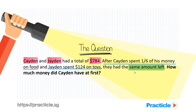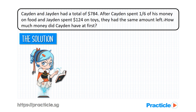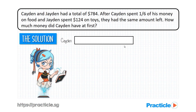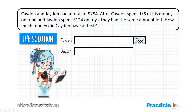Since we know that they ended up with the same amount, and both Caden and Jayden had the same amount of money left, when we draw the comparison model, the length of both bars must be the same. From the question, we know that Caden spent one-sixth of his money on food — that's one unit out of six units — so the amount Caden was left with must be five units.